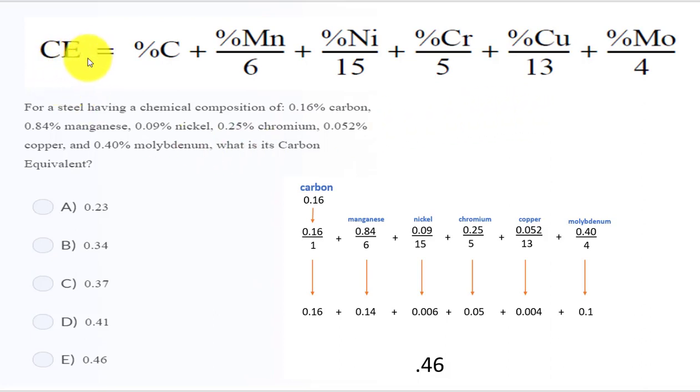This is the CE formula right here. It says CE equals percentage of carbon plus percentage of manganese divided by 6, plus percentage of nickel divided by 15, plus percentage of chromium divided by 5, plus percentage of copper divided by 13, plus percentage of molybdenum divided by 4.